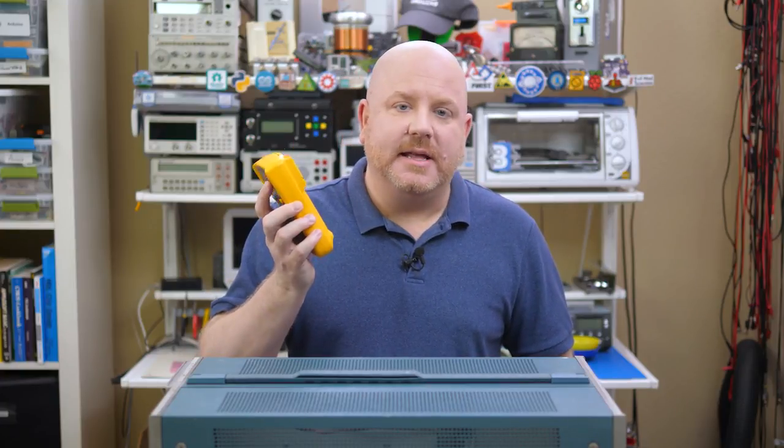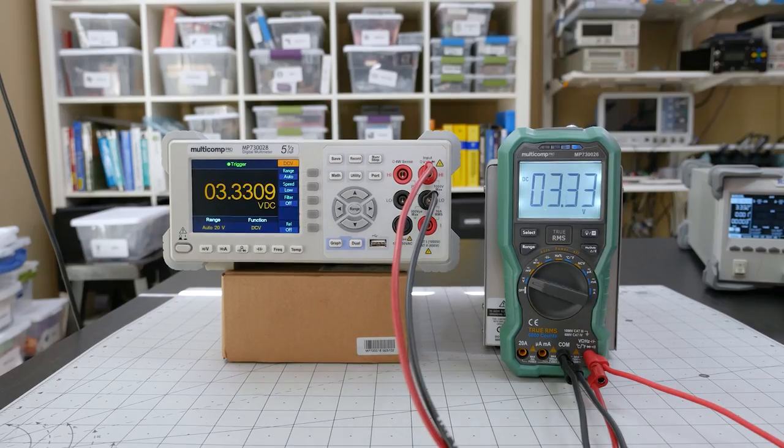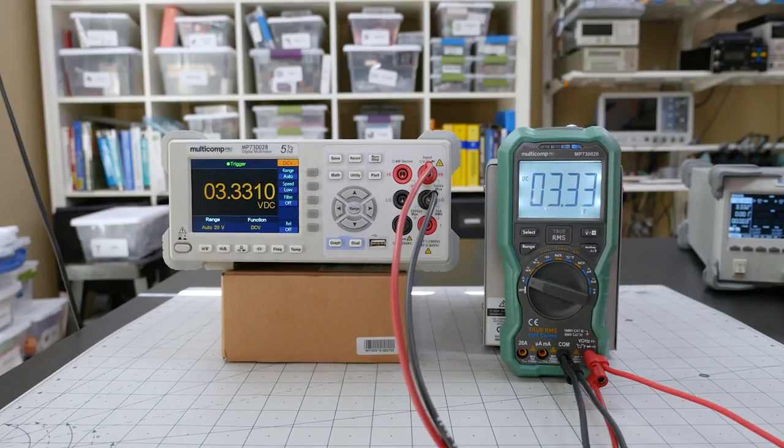For a handheld DMM, this accuracy is typical. I looked at another brand's handheld that has 3.5 digits, and it had a similar rating. So, I want to compare it to my bench DMM, which has 5.5 digits, but a much tighter accuracy.